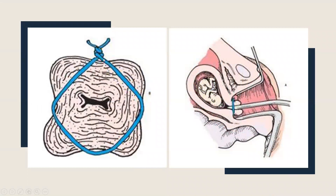Here is the cerclage procedure: looking straight on at the cervix, under general anesthesia, a physician ties the edges of the cervix together with a purse-string stitch. This keeps the cervix closed and keeps the baby inside. They must be very careful not to rupture the membranes during this procedure. Cervical cerclage has been around a long time and is very effective if performed soon enough.